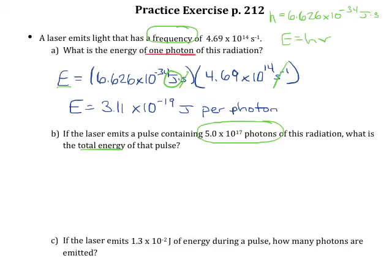Since that's the energy per photon, I can essentially use it as a conversion factor. So I know that I've got 5.0 times 10 to the 17 photons,